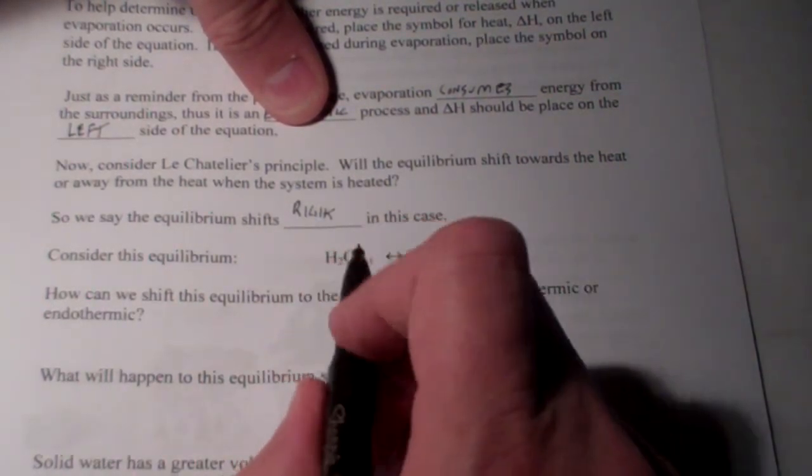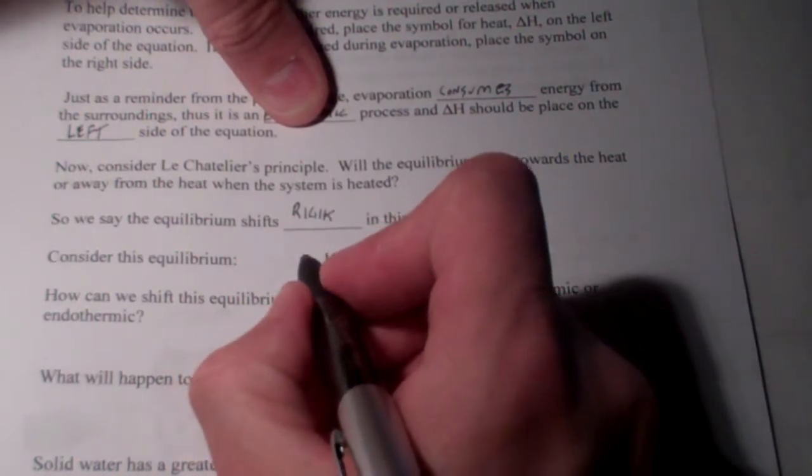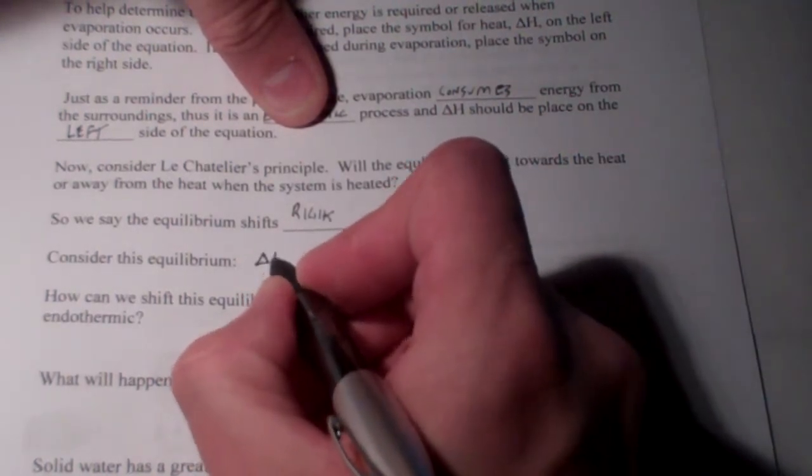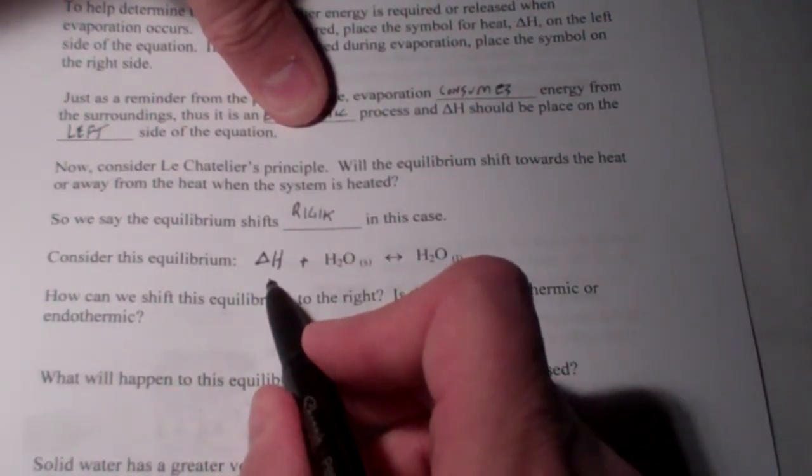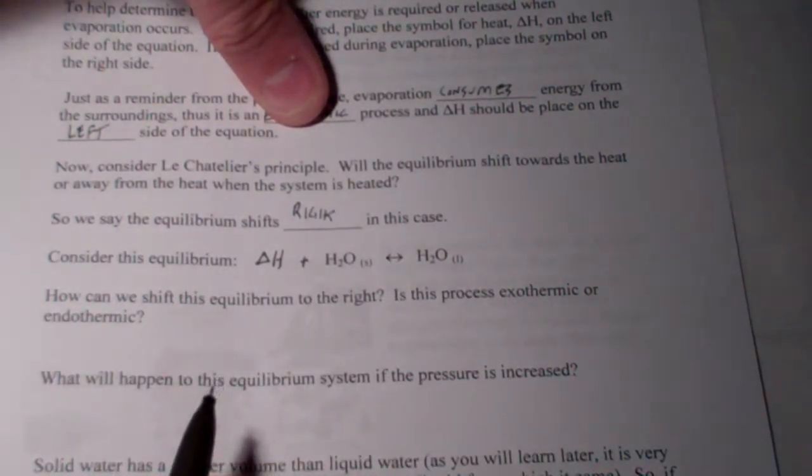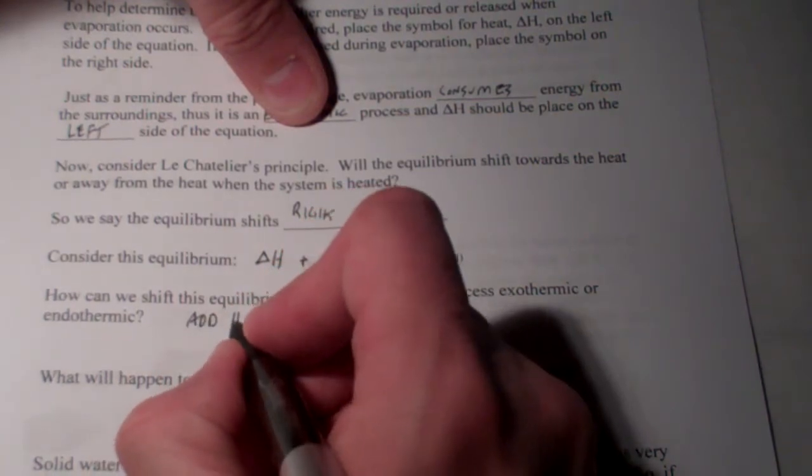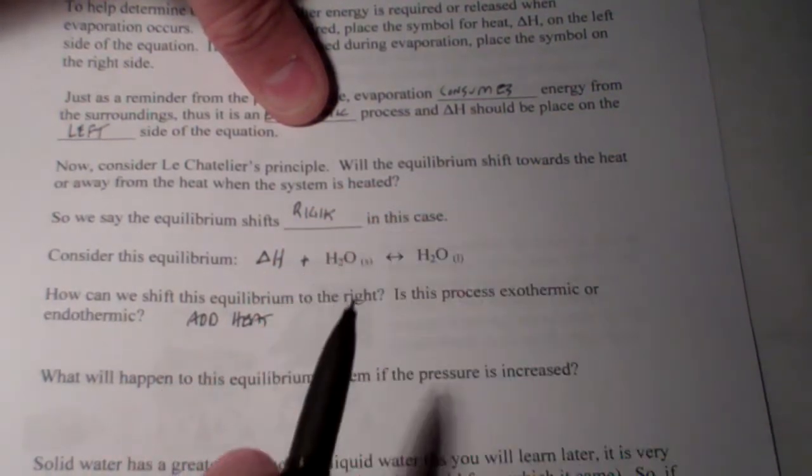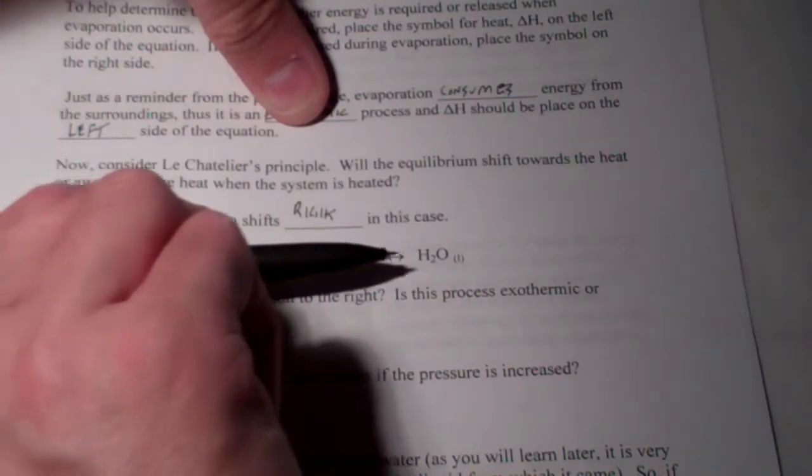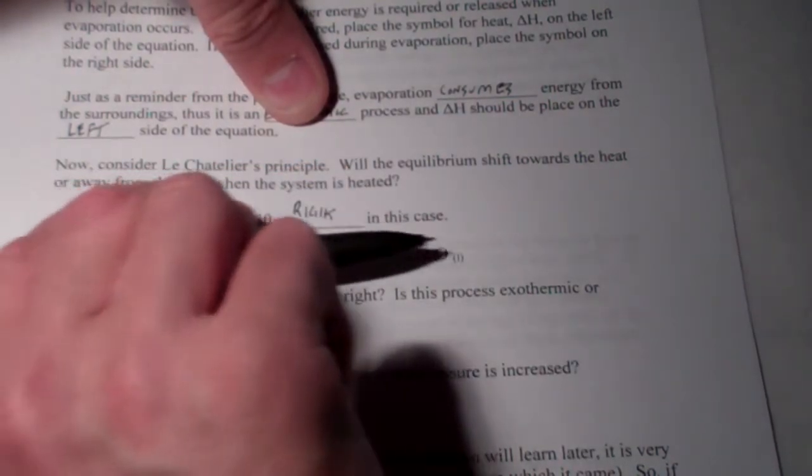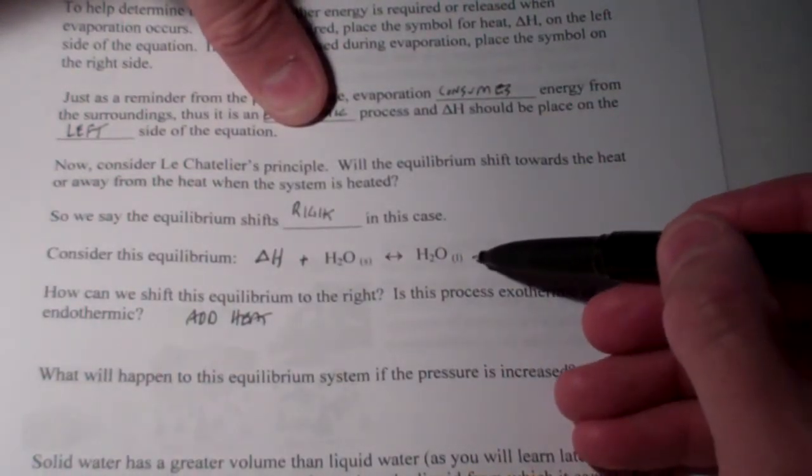I claim for a solid to turn into a liquid, heat again is required. And delta H is on the left-hand side. So, how could I shift this to the right? I could add heat. Adding heat will cause this equilibrium to shift away from the heat. It will consume heat and more liquid would be formed.